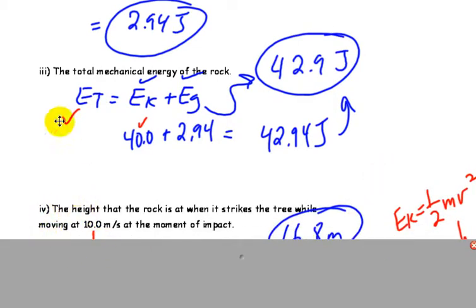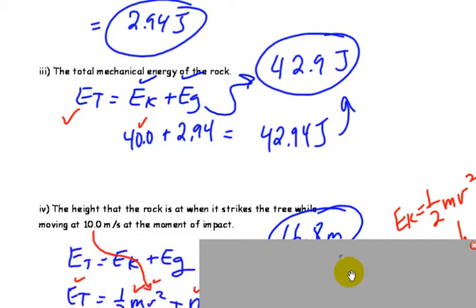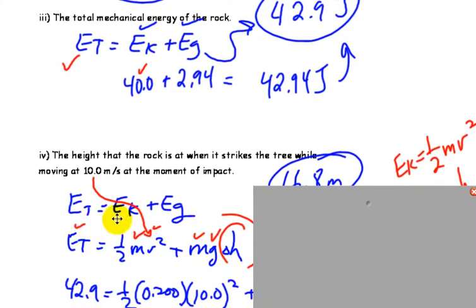Over here, we have that total energy we assume the rock will always have until it loses that energy in terms of friction or heat. So the height that the rock is at when it strikes the tree while moving at 10 meters per second at the moment of impact. For this one, we're using the same formula, ET, total energy equals EK plus EG.